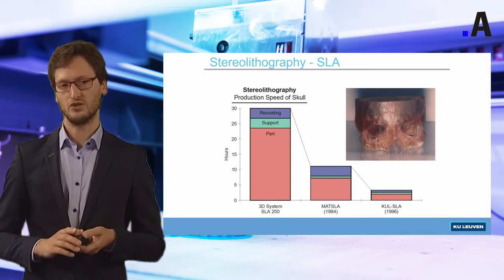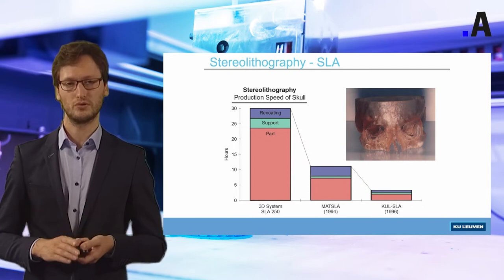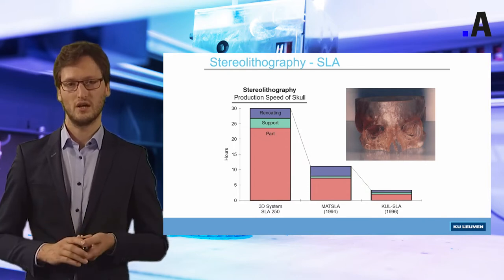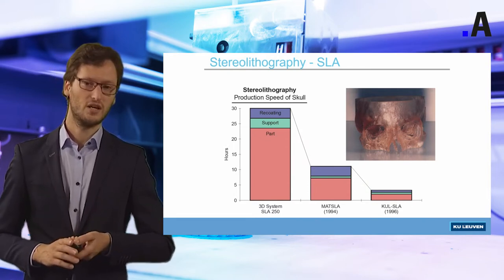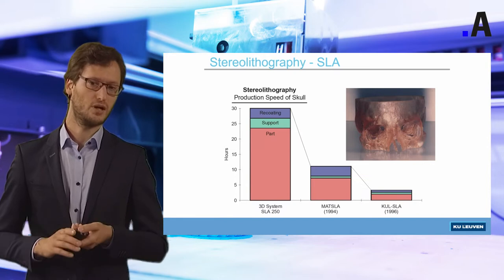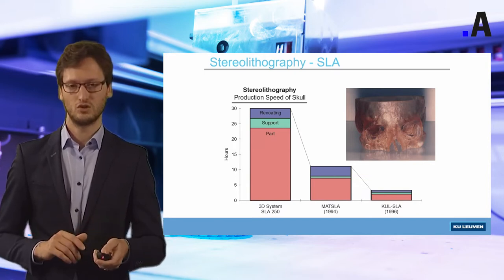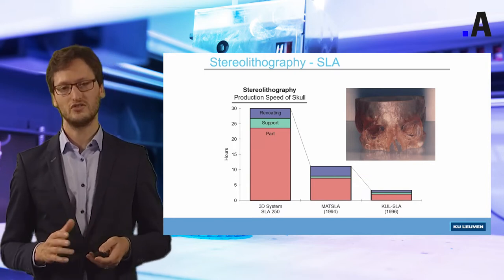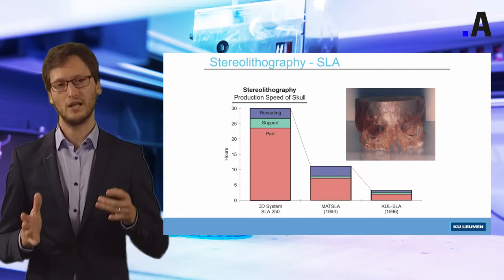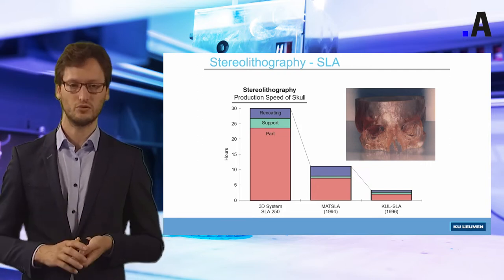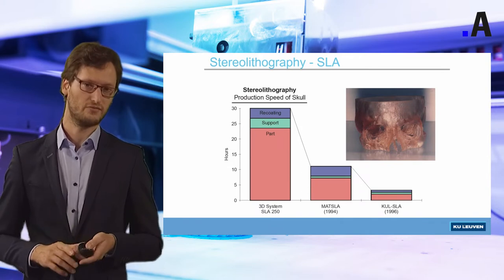In the graph shown below, you can see that over a number of years we were able to increase the productivity of this technology by a large amount just by improving the machining concept. At first, production of this skull took 30 hours, while after machine improvements we were able to get that to below 5 hours.